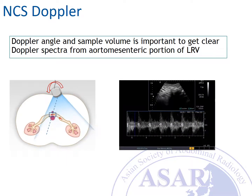Please remember that Doppler angle and sample volume are important to get clear Doppler spectra from the aorta-mesenteric portion of the left renal vein when you are doing Doppler ultrasound for Nutcracker syndrome.